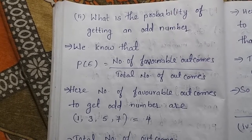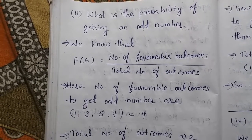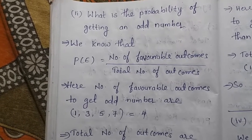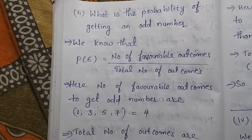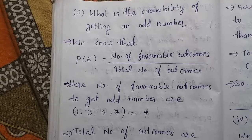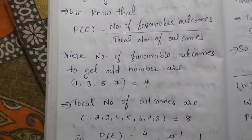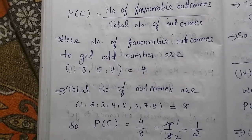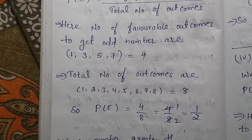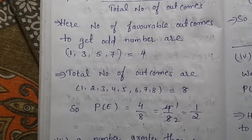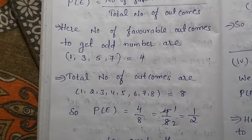The number of favorable outcomes to get an odd number: out of 1, 2, 3, 4, 5, 6, 7, 8, the odd numbers are 1, 3, 5, 7. So the number of favorable outcomes are 4, and total number of outcomes are 8. The probability is 4 by 8, which simplifies to 1 by 2. So the probability of getting an odd number is 1 by 2.